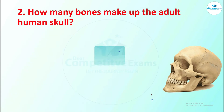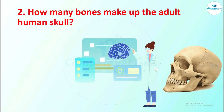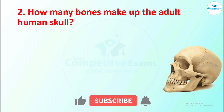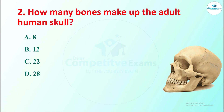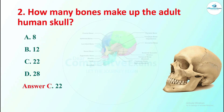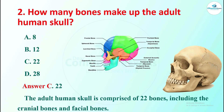The next question: how many bones make up the adult human skull? Options are 8, 12, 22, and 28. The right answer is 22. The adult human skull is comprised of 22 bones, including the cranial bones and facial bones.